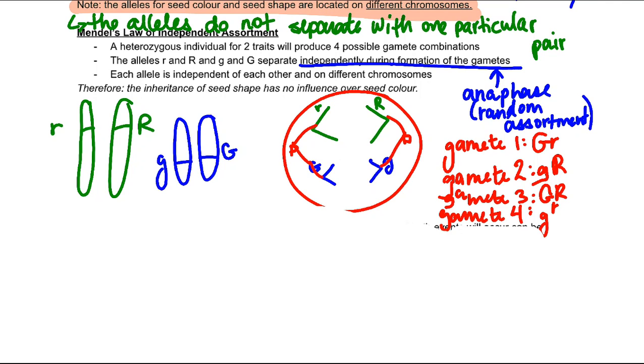I cannot stress this enough. This happens during anaphase, that random assortment component, and it happens randomly. Therefore the inheritance of seed shape has no influence over seed color.